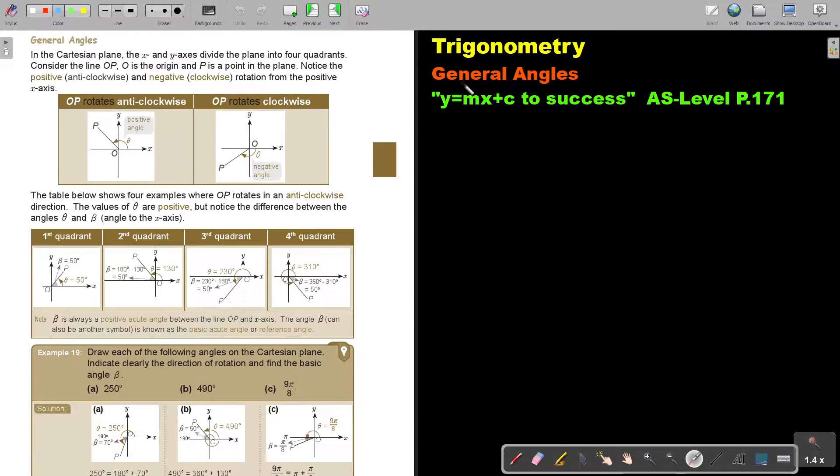In this video, we will start with general angles. You will find this on page 171 in the Namibia AS level mathematics book Y equals MX plus C to success.